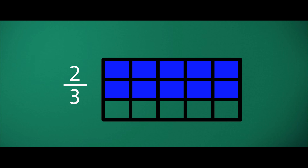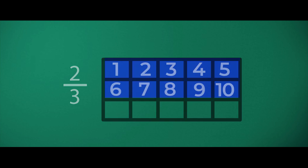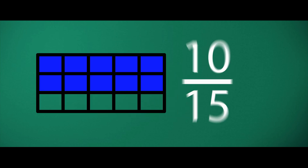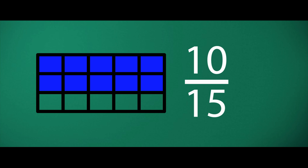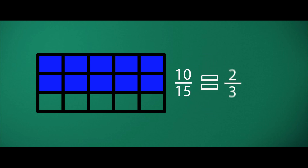We already filled two-thirds of the grid. Can you count how many grids are filled? Let's count together: one, two, three, four, five, six, seven, eight, nine, ten. So it is 10 out of 15 are filled. That means 10/15 is equivalent to two-thirds.